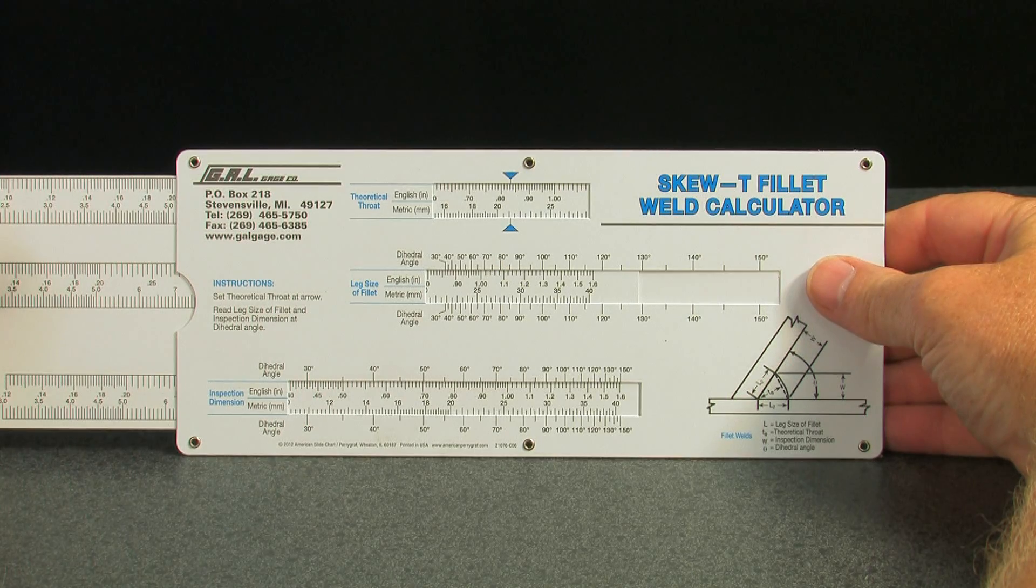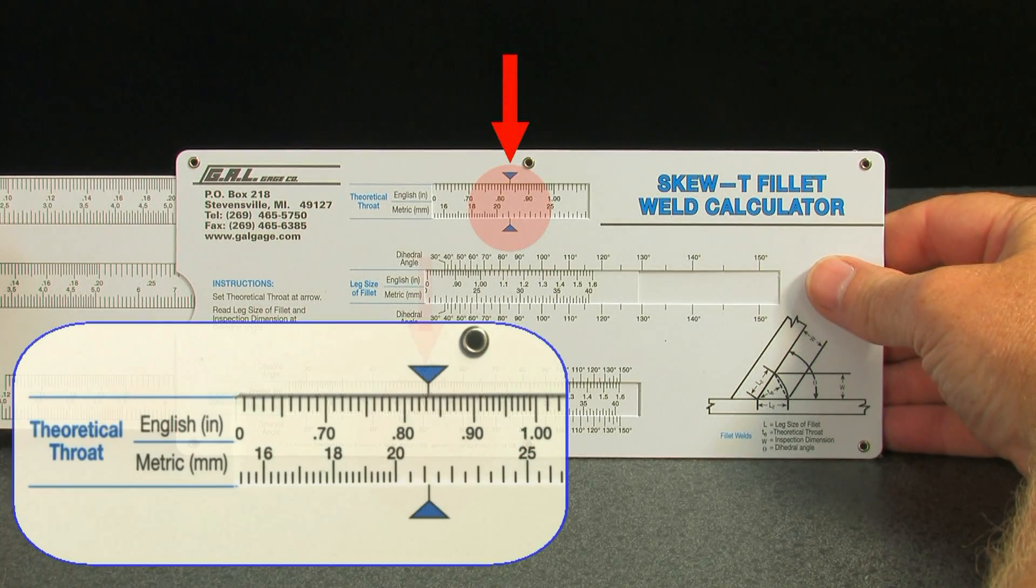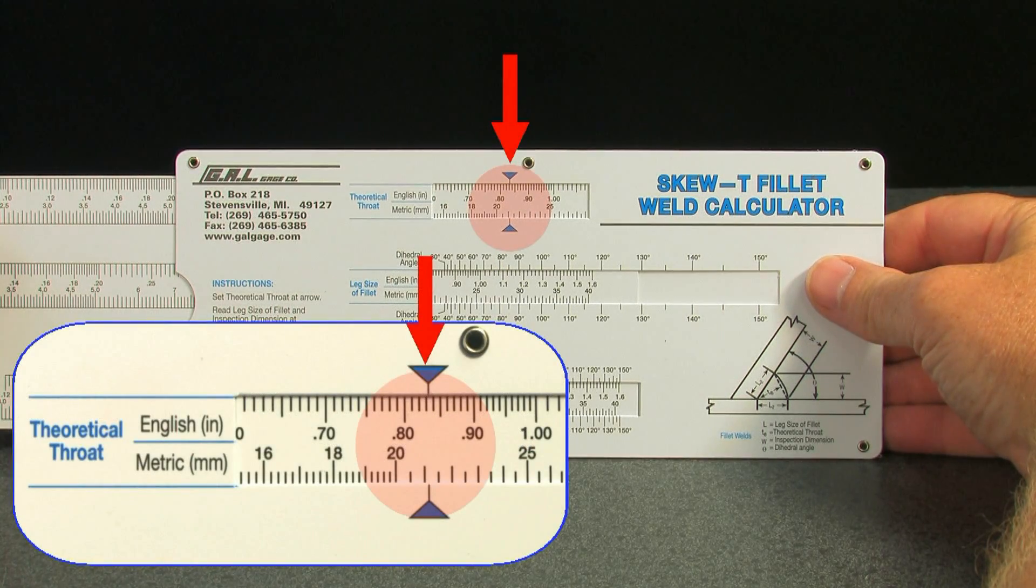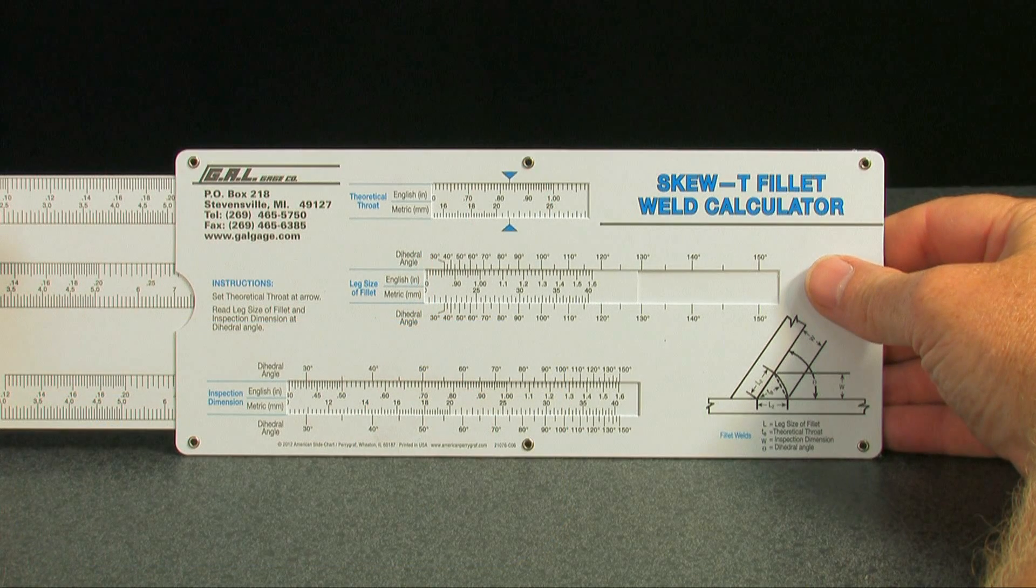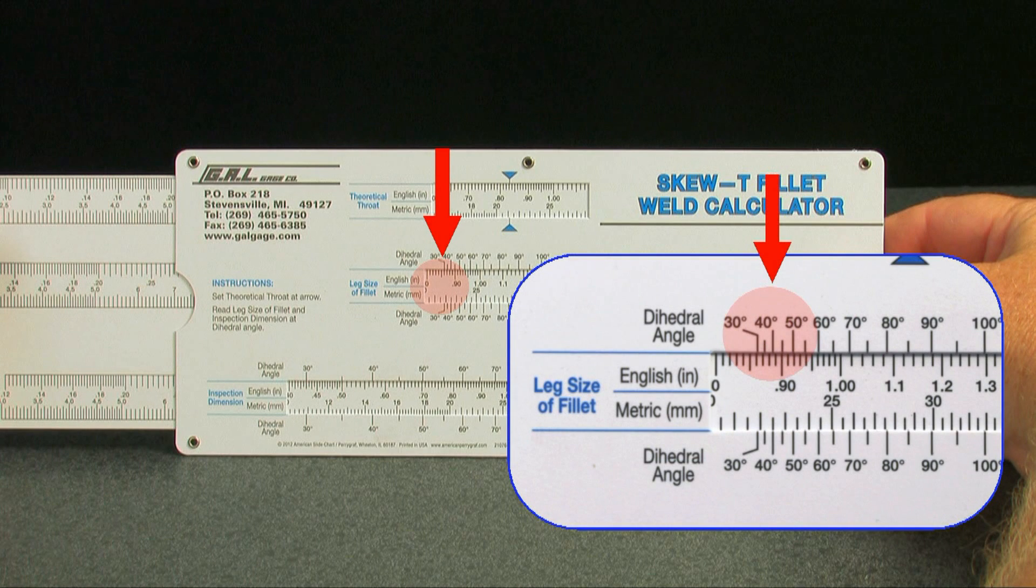Now, look at the theoretical throat scale. It reads just over 830 thousandths. Now, look at the leg size scale and find the 35 degree dihedral angle. It reads just over 870 thousandths.